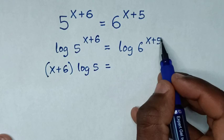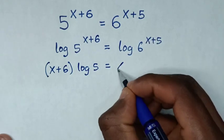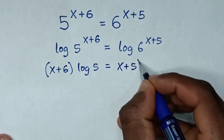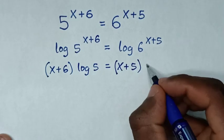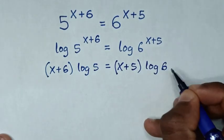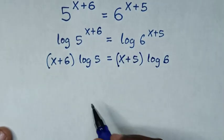...also this power will move to the base, so it will be x plus 5 bracket log of 6.